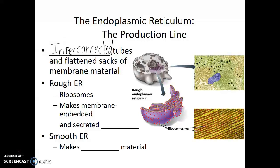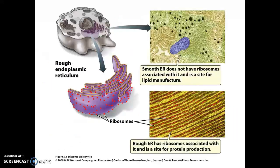Specifically, the types of proteins made at the rough ER are those that will either be embedded within membranes or secreted from the cell. In contrast, the smooth ER does not have ribosomes, so it's very smooth. Since there are no ribosomes, lipids and membrane materials are what's being made there — synthesized at the smooth ER. So phospholipids, cholesterols, and other types of membrane materials are formed at the smooth ER. Both the rough and smooth ER are sites of synthesis: the rough ER makes proteins, whereas the smooth ER makes lipid material.